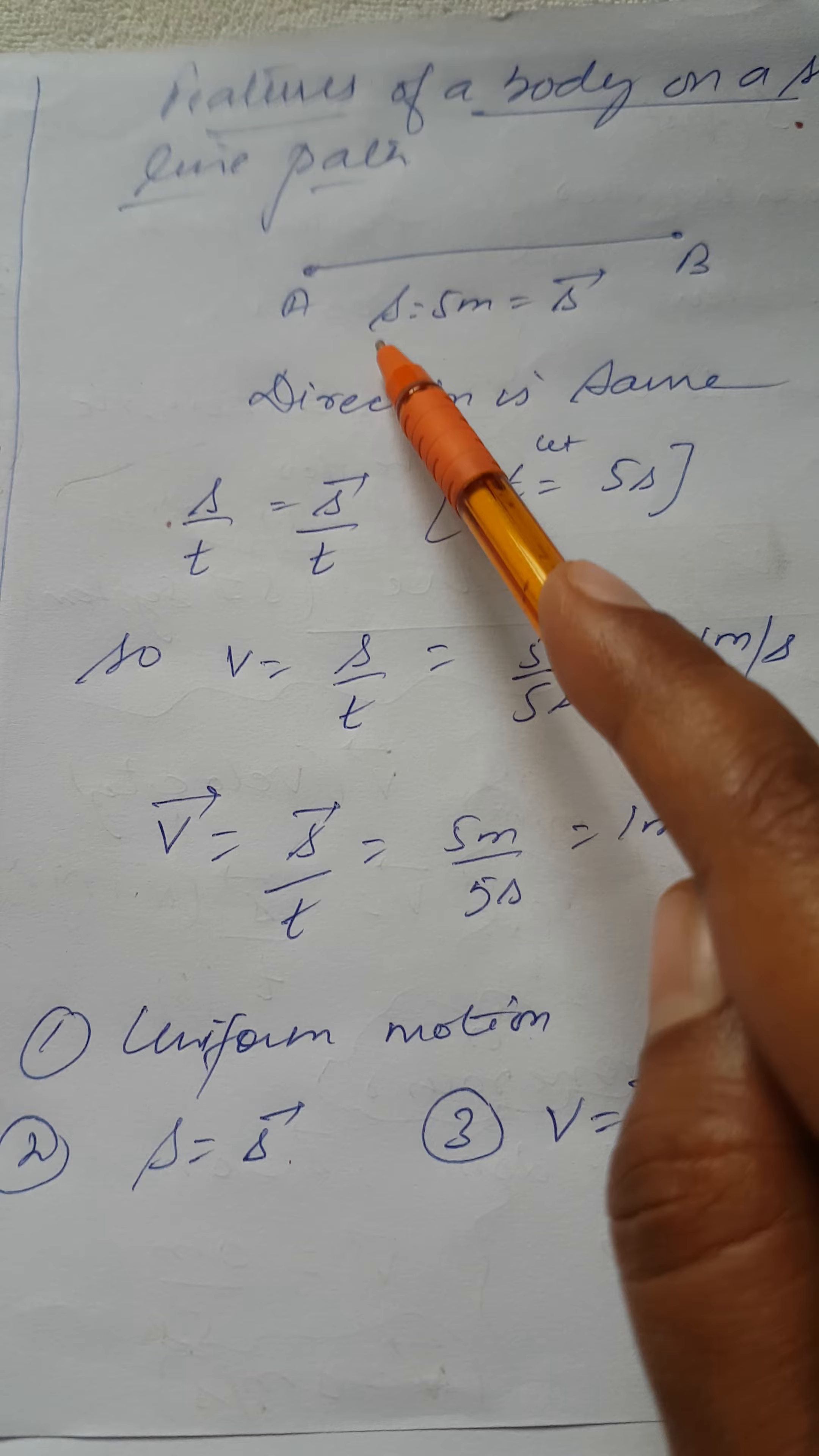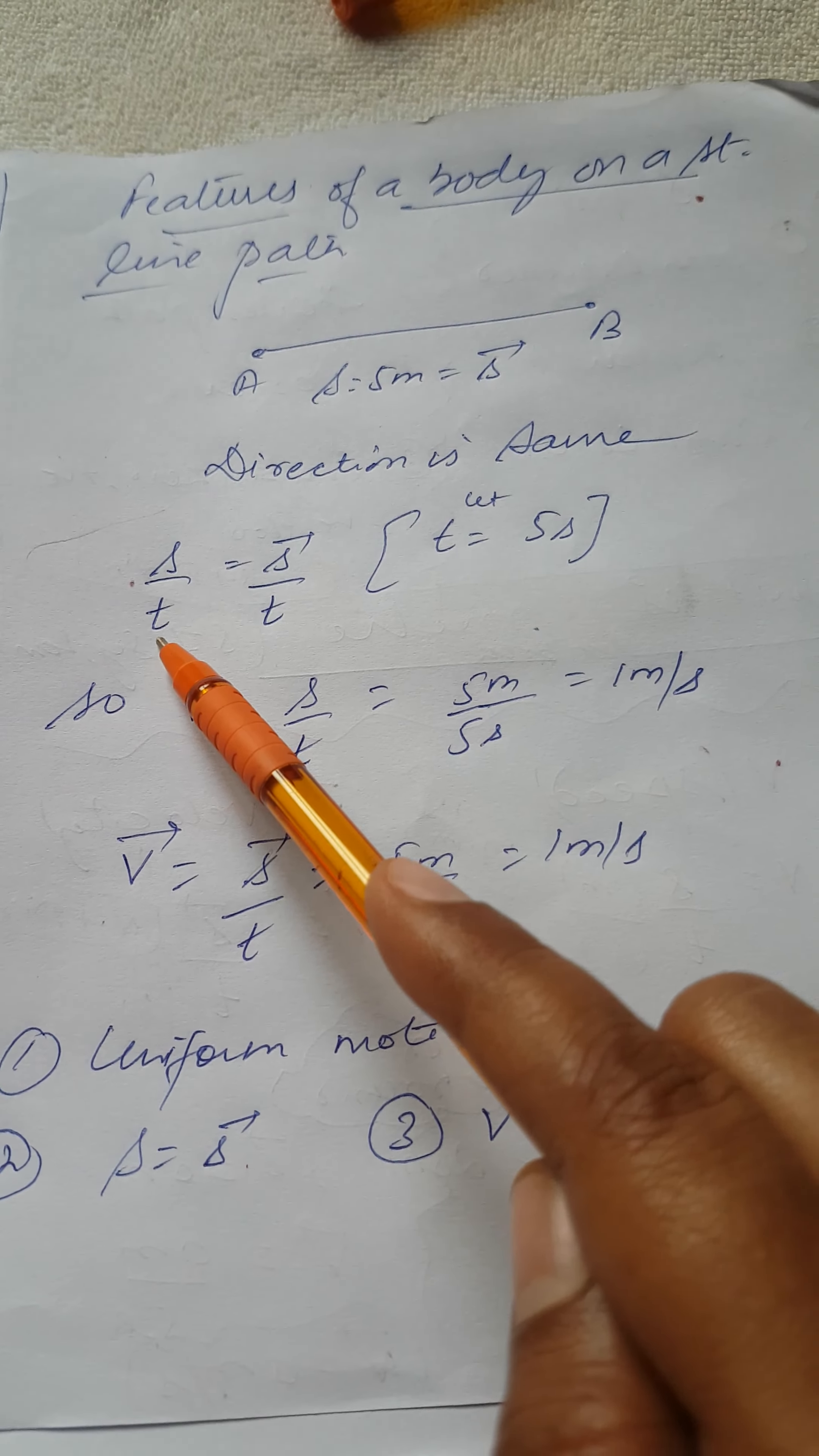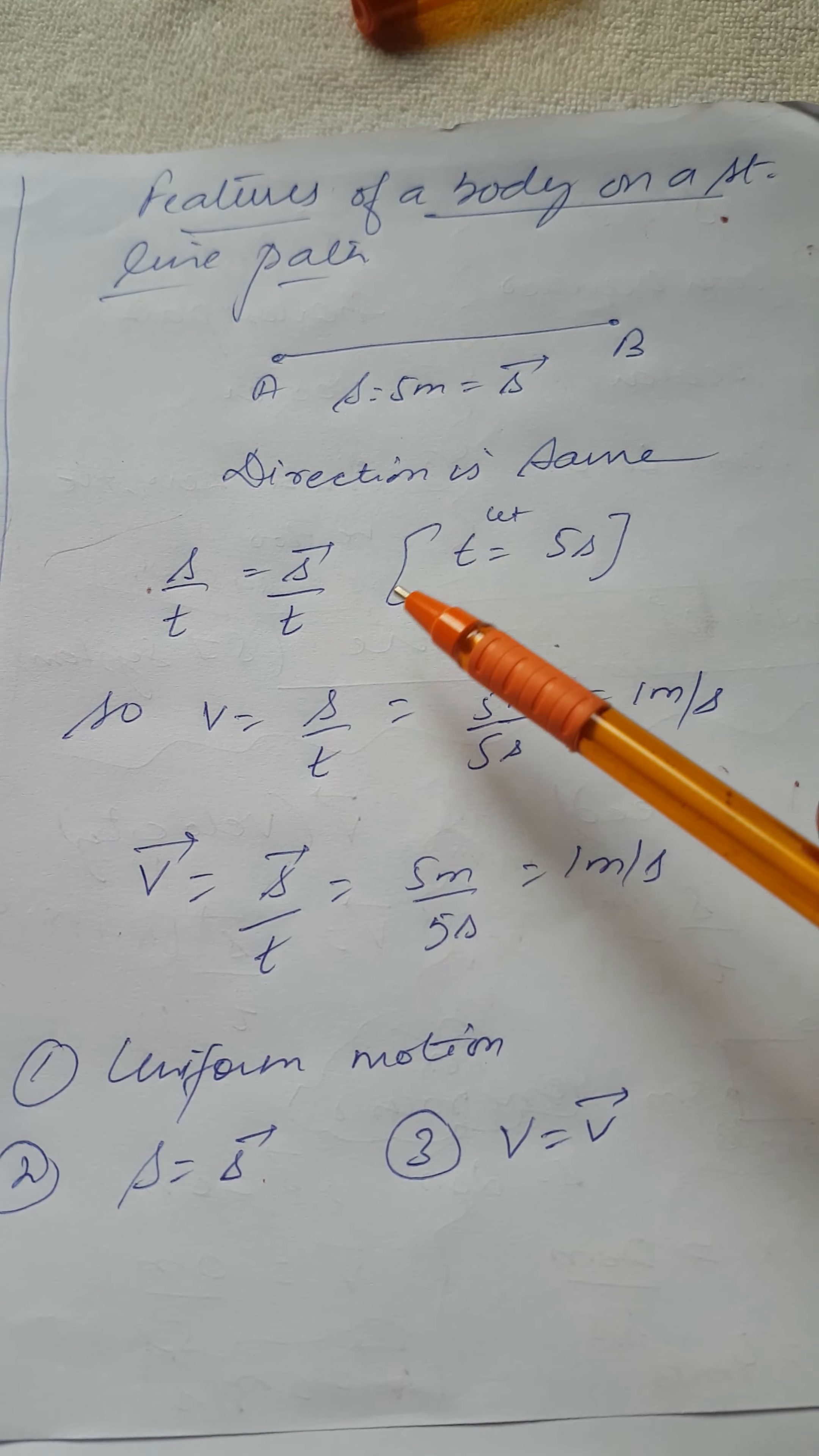Second thing is when distance and displacement become same, and if the same time is taken to complete this path, then S by T means if you divide distance and displacement by time taken, that time will obviously remain same.